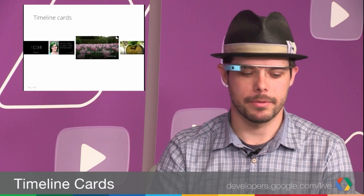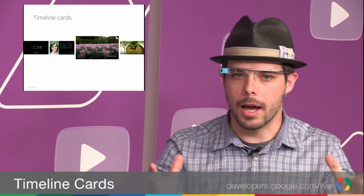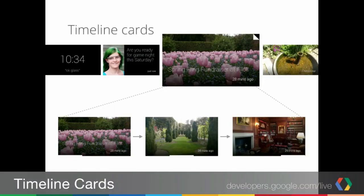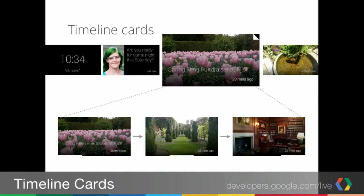They can also be bundles of items. You notice the fold in the upper right hand corner of this item? Well that means it's a bundle, and if the user taps on it, they'll get a sub-timeline of sorts of multiple items. Now there's two ways that this can happen: one, if you inserted a single timeline item with multiple pages, or if you inserted multiple items with a single bundle ID that links all of them together in a single thread.